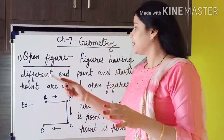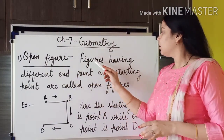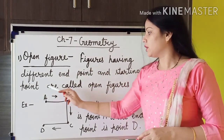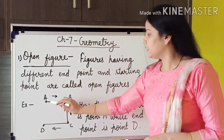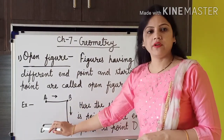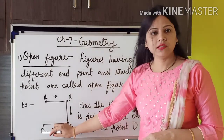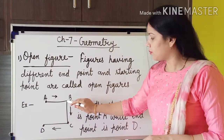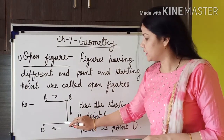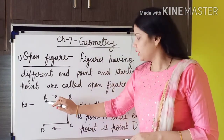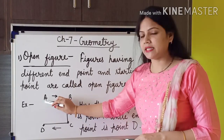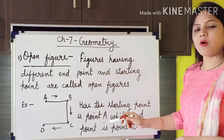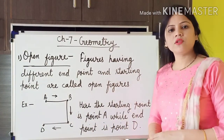Understood? Figures having different end points and starting points are called open figures. Here, I made four points A, B, C, and D. I joined point A to B, then B to C, then C to D. In this figure, the starting point is A while the end point is D. Just pause this video and write these things in your maths copy.